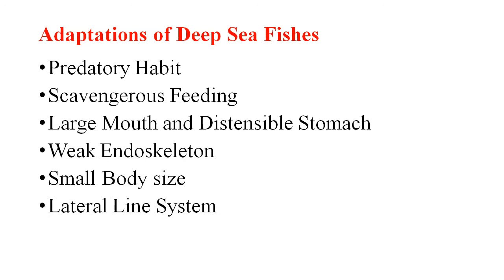The second point is scavenger and heavy feeding. Most of the deep sea animals feed on the bodies of surface forms that sink to the bottom. Some even feed on matter on the surface water animals. As low temperature prevails in the deep sea, decomposition of bodies falling from above is retarded, and the deep sea animals enjoy an almost fresh diet.